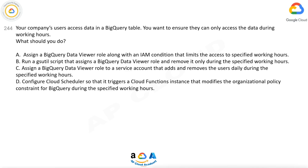Question number 244. Your company's users access data in a BigQuery table. You want to ensure they can only access the data during working hours. What should you do? A. Assign a BigQuery data viewer role along with an IAM condition that limits the access to specified working hours. B. Run a SIDL script that assigns a BigQuery data viewer role and removes it only during the specified working hours. C. Assign a BigQuery data viewer role to a service account that adds and removes the users daily during the specified working hours. D. Configure Cloud Scheduler so that it triggers a Cloud Functions instance that modifies the organizational policy constraint for BigQuery during the specified working hours.